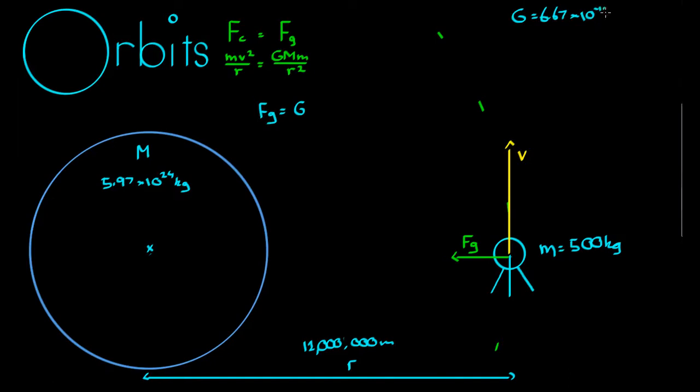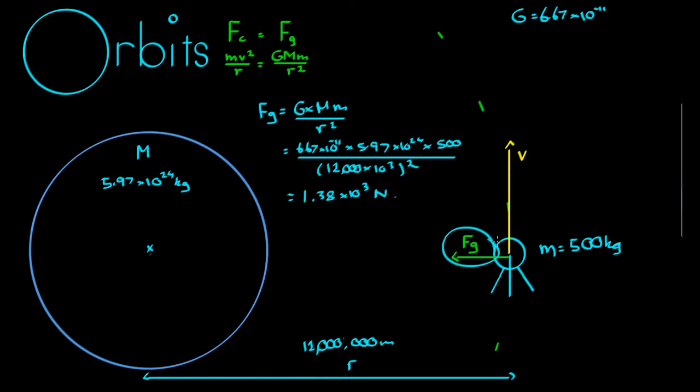Sorry, I always forget big G is 6.67 times 10 to the negative 11, that never changes, that's on the cheat sheet, multiplied by big M by little m over r squared, which comes to 6.67 times 10 to the negative 11 multiplied by 5.97 times 10 to the 24 multiplied by 500, all over 12,000 times 10 to the 3 squared. I have this comes to 1.38 times 10 to the 3 newtons.